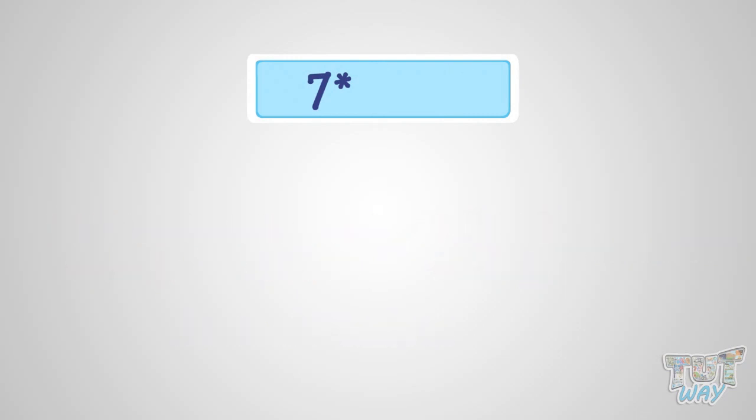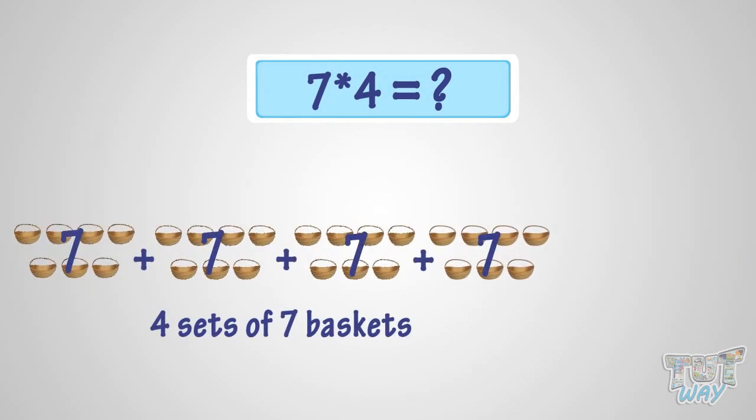What is 7 multiplied with 4? It is the same as four sets of 7 baskets. 7 plus 7 plus 7 plus 7 equals 28. So, it is 28 baskets. That is, 7 multiplied by 4 is 28.